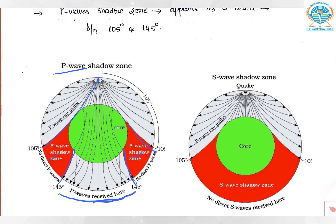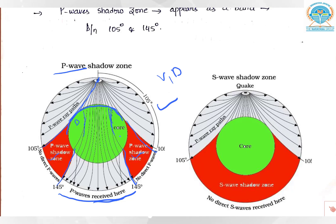In the P wave shadow zone between 105 and 145 degrees, waves could not be reported. When P waves pass through the mantle and encounter the core — which is comparatively denser than the mantle — the direction changes and the waves get deflected. The velocity in the core is much higher than in the mantle because denser medium means higher velocity. As waves exit the core back into the mantle, their direction changes again and velocity decreases since mantle is less dense than core.